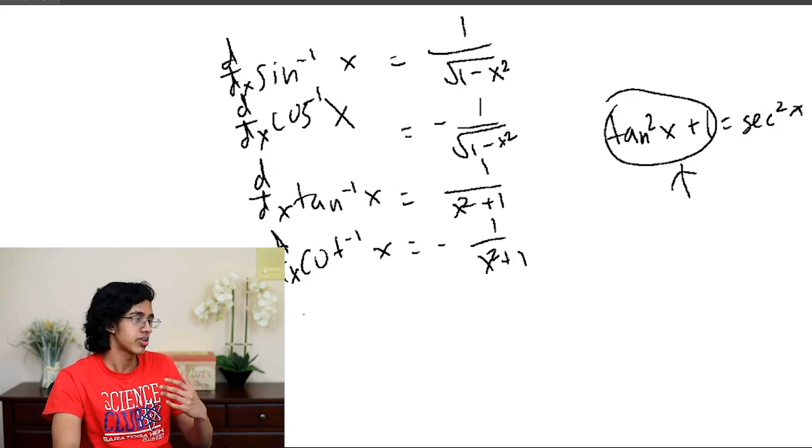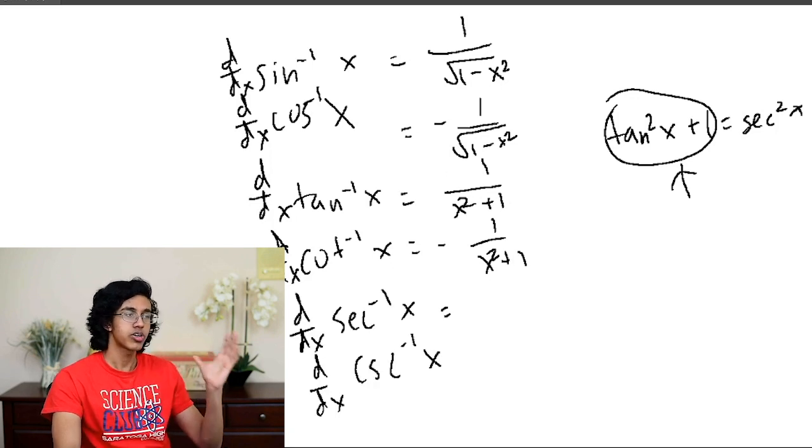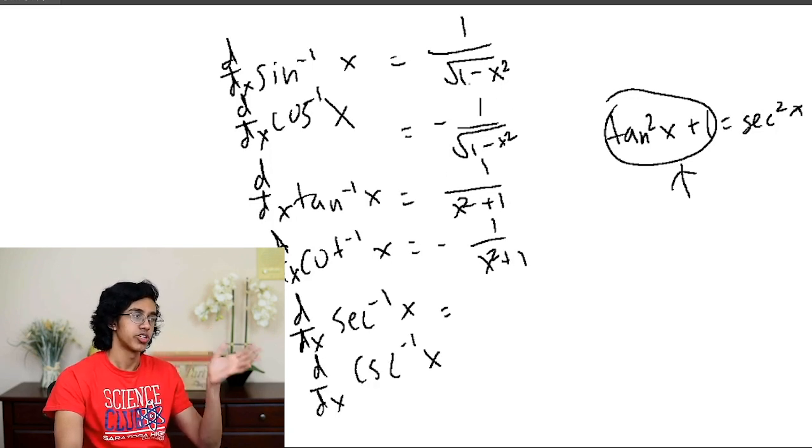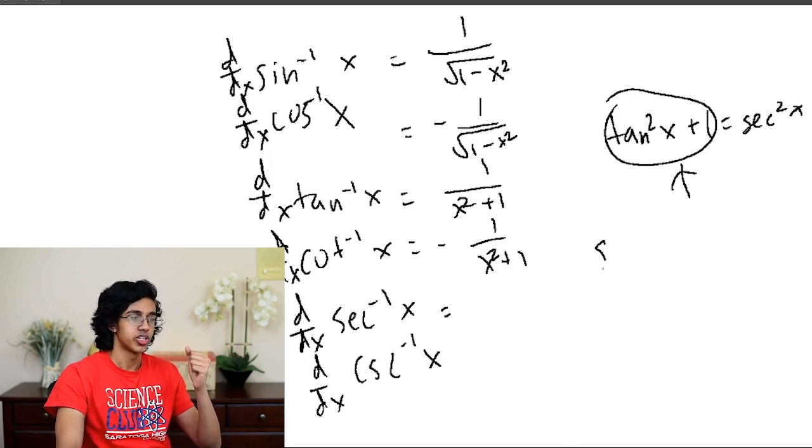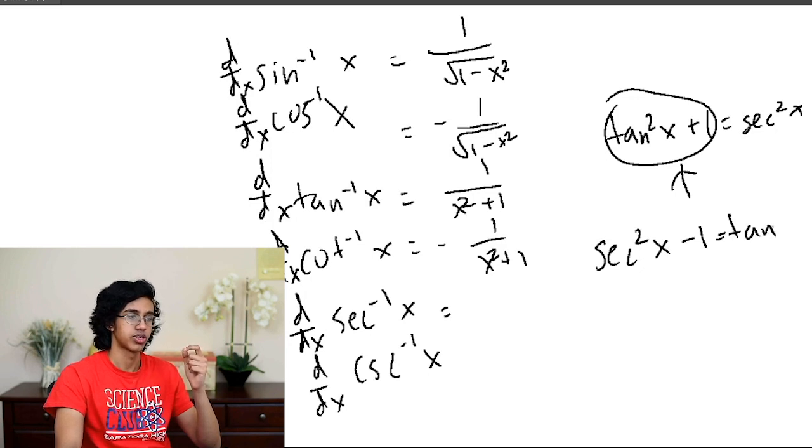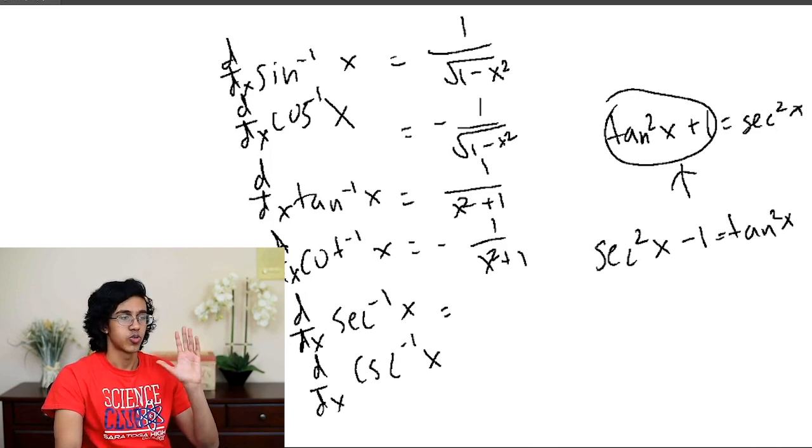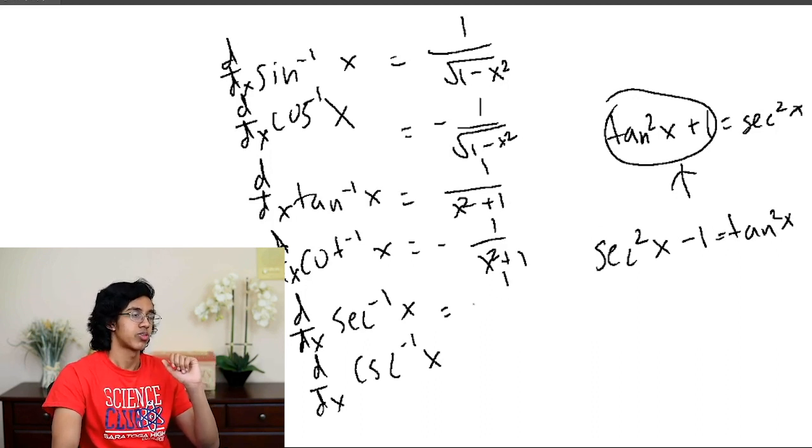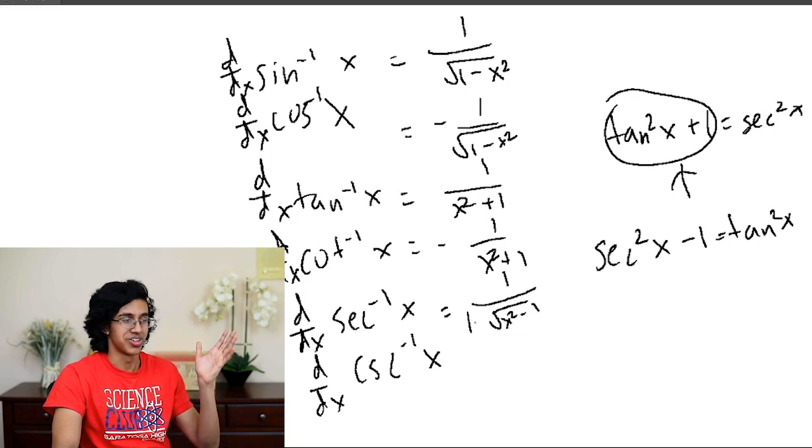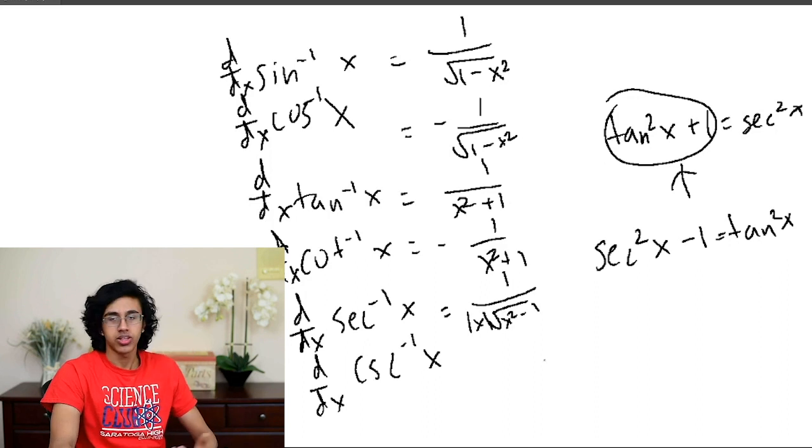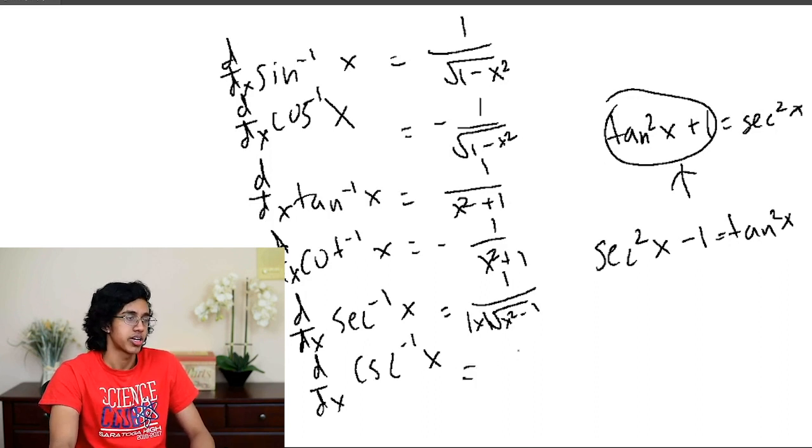Alright, and then lastly we got secant and cosecant. So now we can apply the same logic as we did for sine x and cosine x, and we know that if we do secant squared x minus 1, we get tan squared x. So we know that we're going to have an x squared minus 1 somewhere. So in this case, our x squared minus 1 is going to look like this, root x squared minus 1. And then for no reason at all, you put an absolute value of x over here. And then the same thing for the other one, except it's negative.